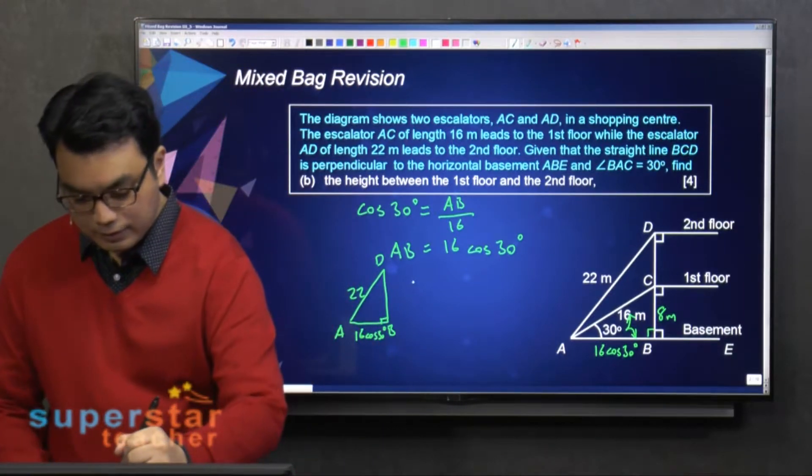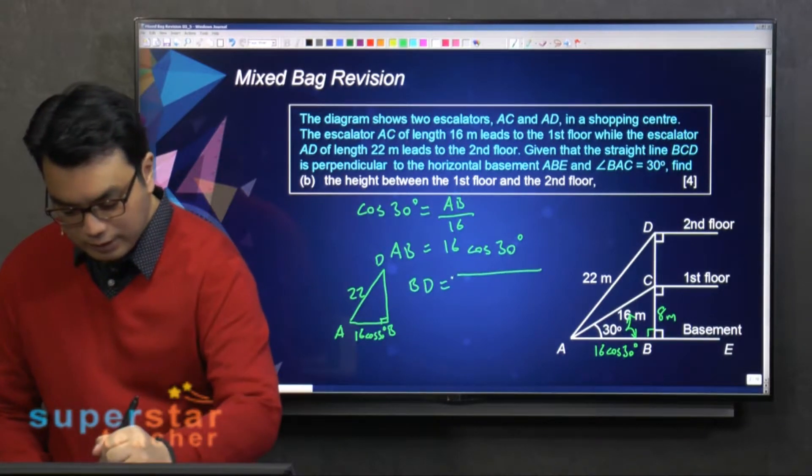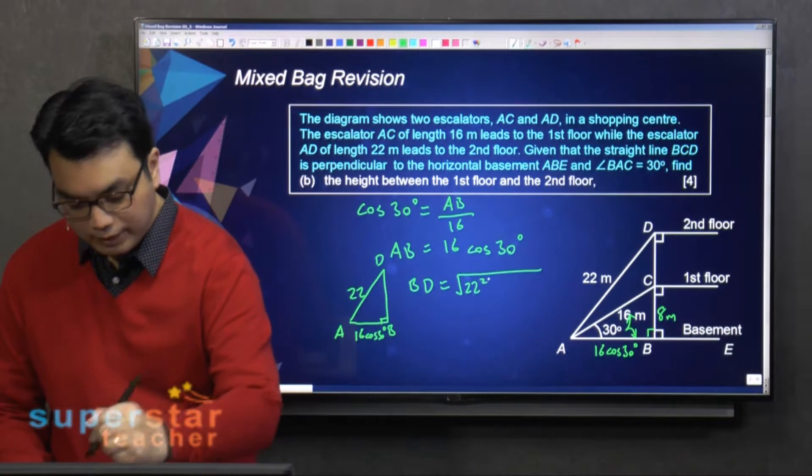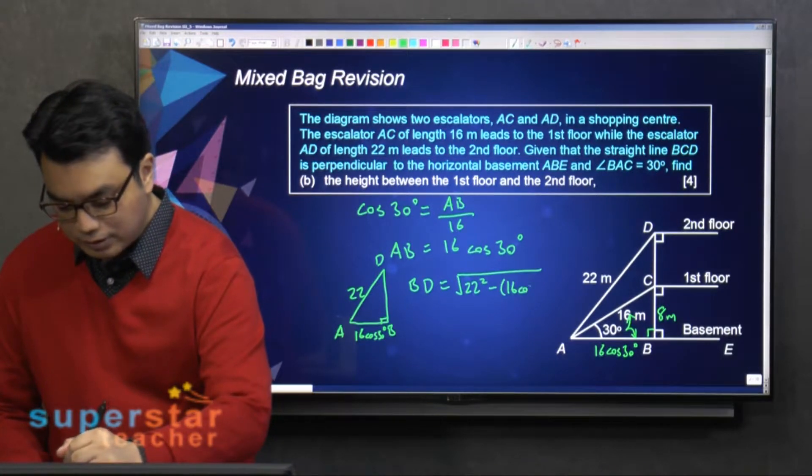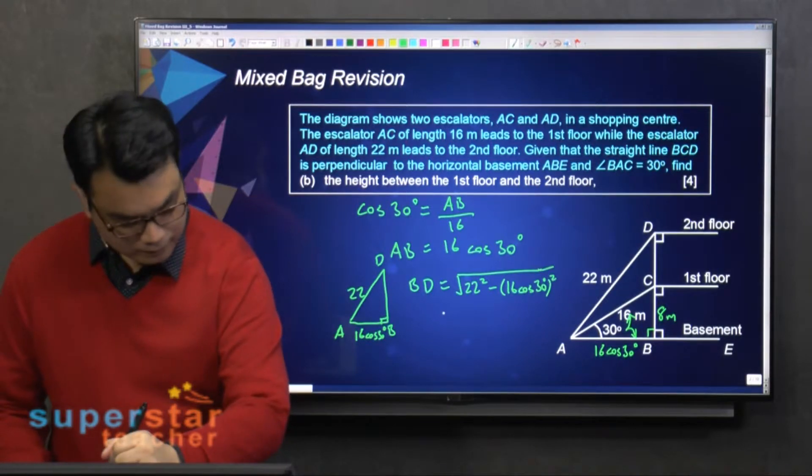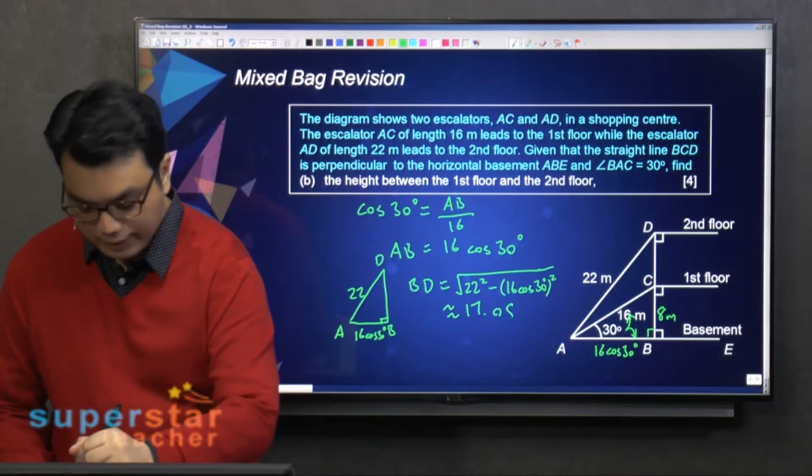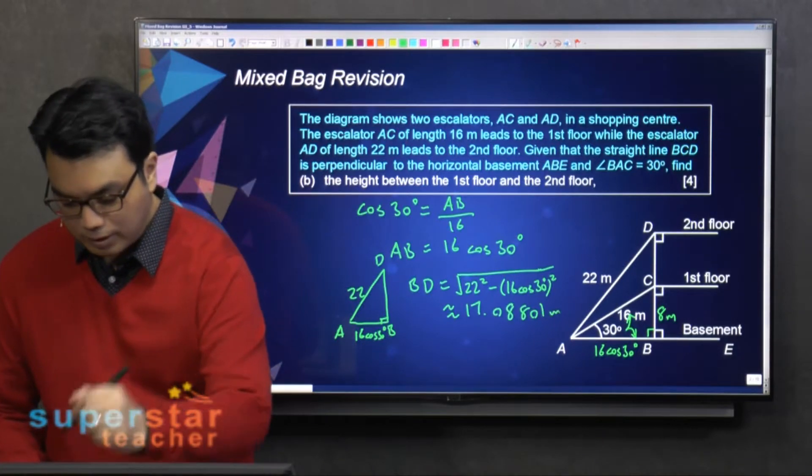So BD, using Pythagoras theorem, is equals to 22 squared minus the square of this. This is approximately 17.08801 meters.